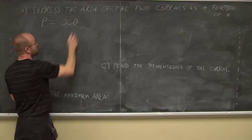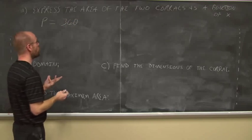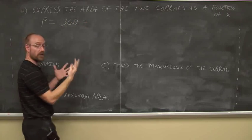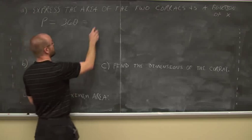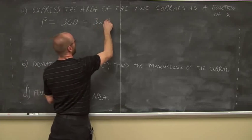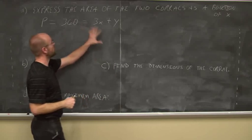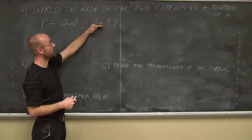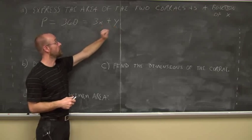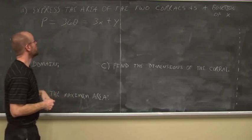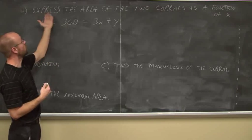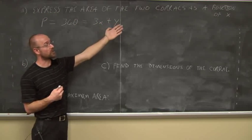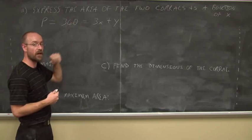It's 360 total yards. I know that there are three sides of x length in my illustration and one side of y length. So I'm able to build an equation that says this is the amount of fencing I have: 3x + y = 360. It asked me to express the area of the two corrals as a function of x, so it's asking me for the area.